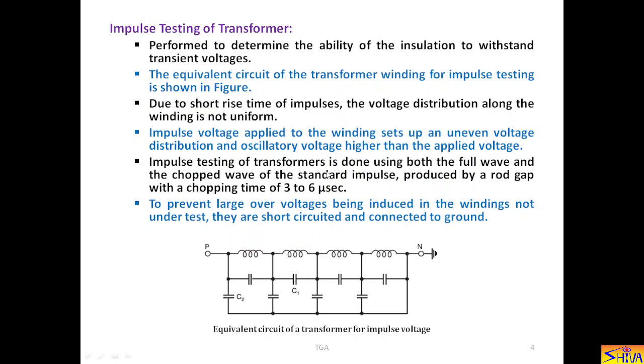Impulse testing of the transformer is done using both the full wave and the chopped wave of the standard impulse. Standard impulse means if it is lightning impulse, it is 1.2 by 50 microsecond. If it is switching impulse, then it is 250 by 2500 microsecond. And chopped wave of the standard impulse is produced by a rod gap with a chopping time of 3 to 6 microseconds.